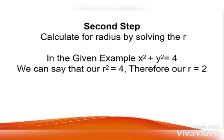Second step: calculate the radius by solving for r. In the given example, x squared plus y squared is equal to 4. We can say that our r squared is equal to 4. Therefore, our r is equal to 2.